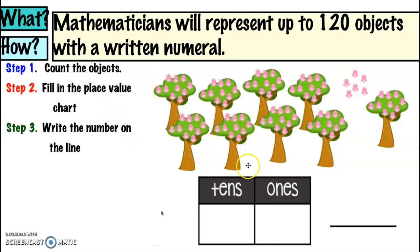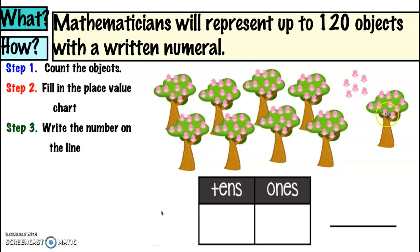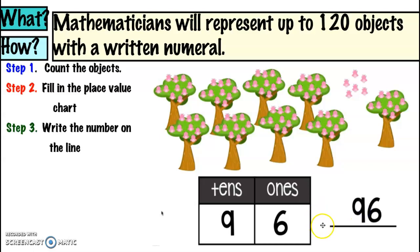So let's count the objects. We see some birds settled on a tree and we also see some birds flying around. We already know that each group has ten. So how many tens do we see? We see nine tens. How many ones do we see? Six ones. Nine tens and six ones represent what number? Ninety-six.